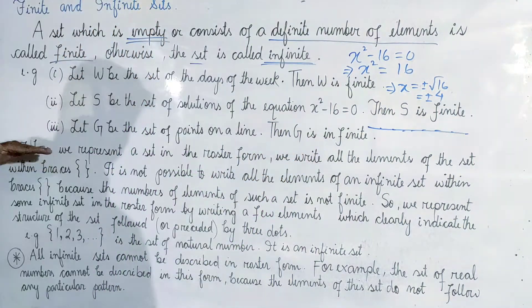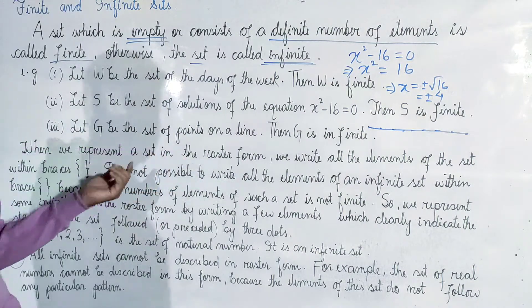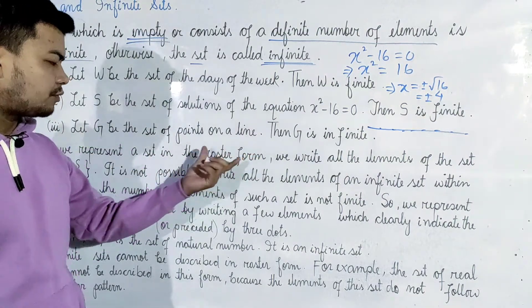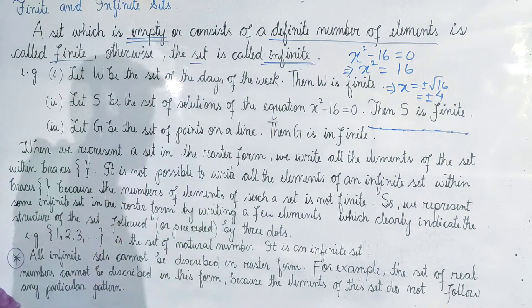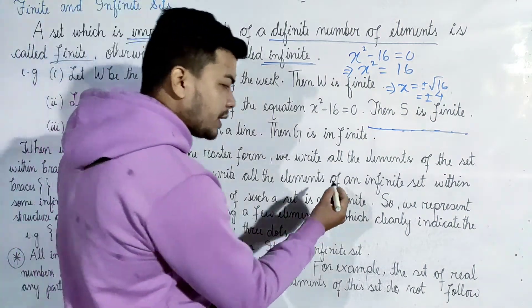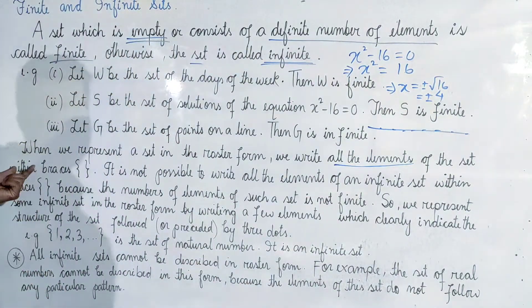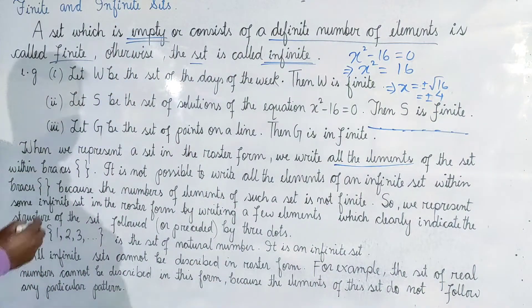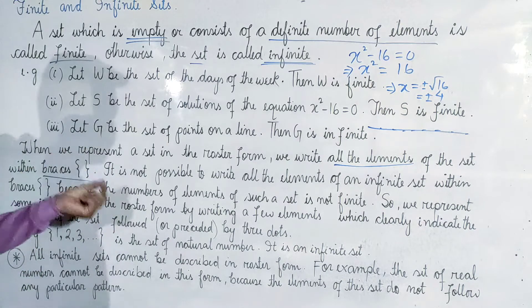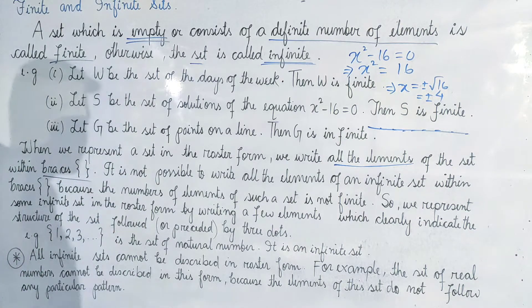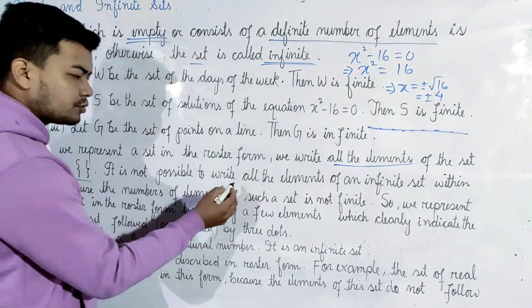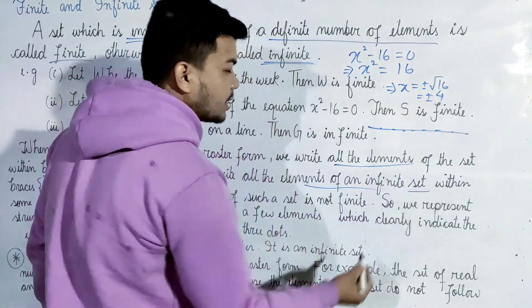When we represent a set in roster form, we write all the elements. However, it is not possible to write all the elements of an infinite set.